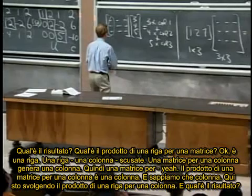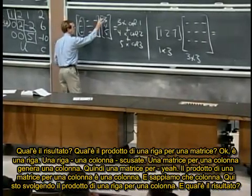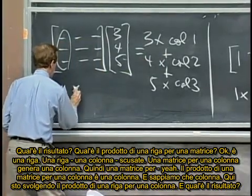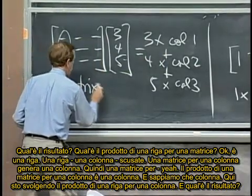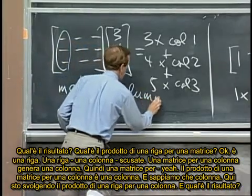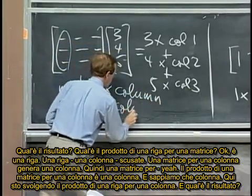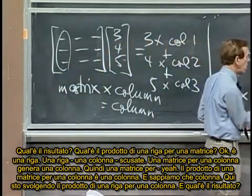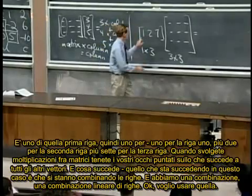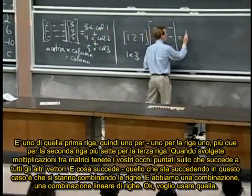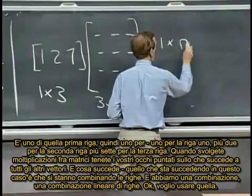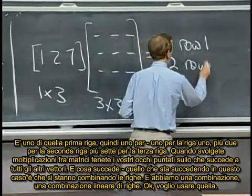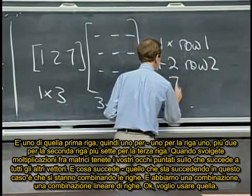And, okay, it's a row. A row, a column, sorry, a matrix times a column is a column. So matrix times, yeah, matrix times a column is a column. And we know what column it is. Over here I'm doing a row times a matrix and what, and what is the, what's the answer? It's one of that first row, so it's one times, one times row one, plus two times row two, plus seven times row three.